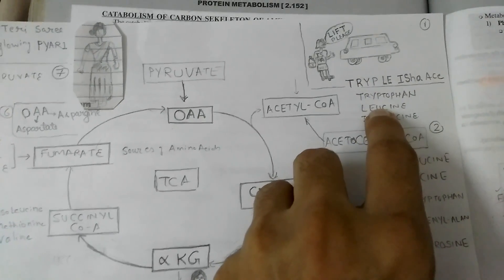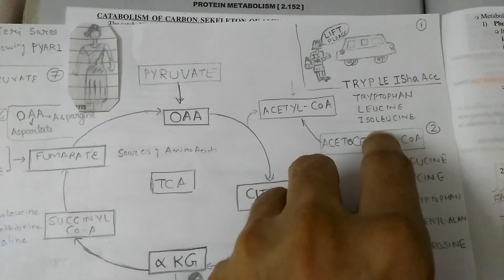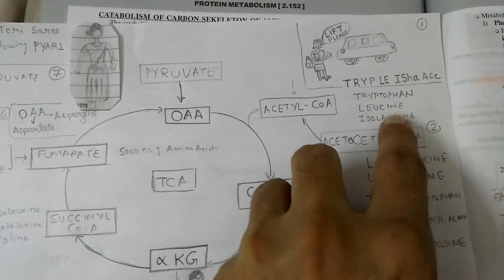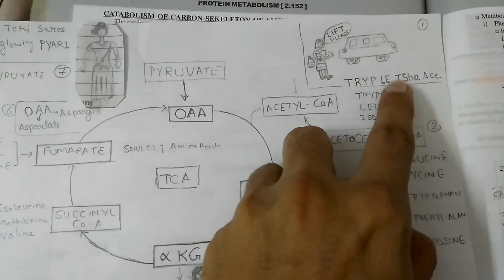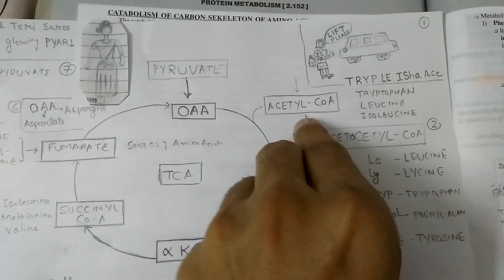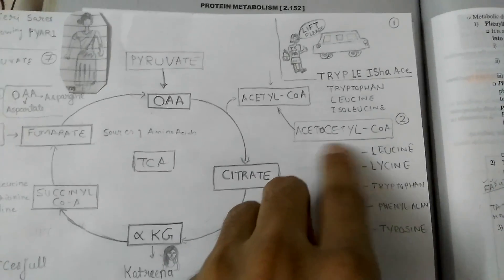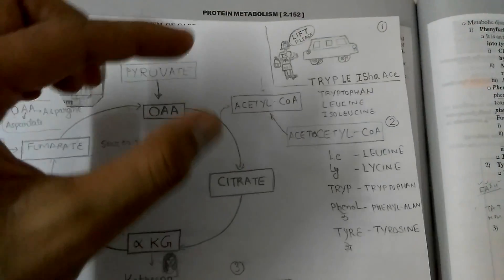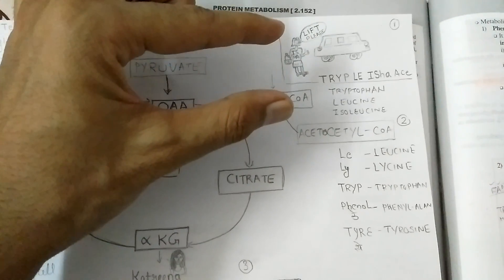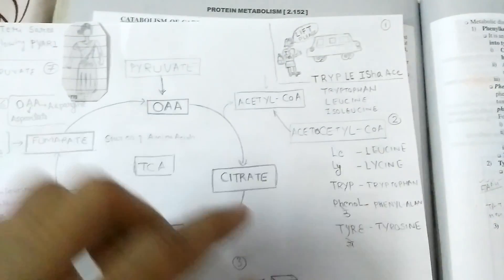Tryptophan, leucine, and isoleucine—this triple A Isha will derive acetyl-CoA. Now we move on to acetoacetyl-CoA. So here the first part of the story is that Isha is triple A.